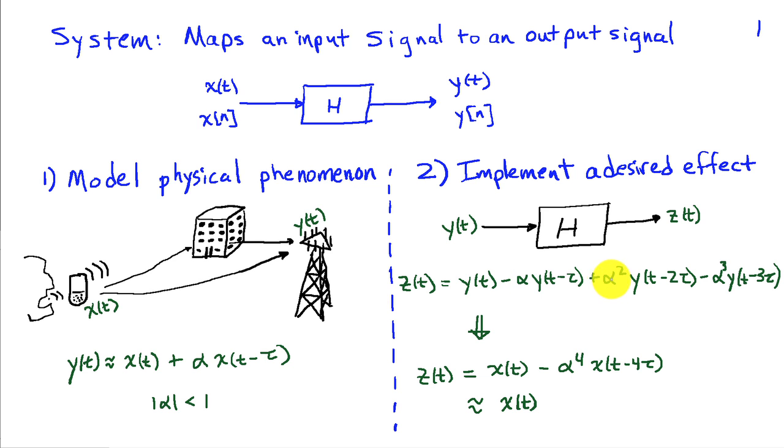If I add alpha squared y of t minus 2 tau, I'll have the second order term canceled, and so on. You can see that if we do this up through alpha cubed y of t minus 3 tau, our output z of t would be x of t minus alpha to the fourth x of t minus 4 tau.